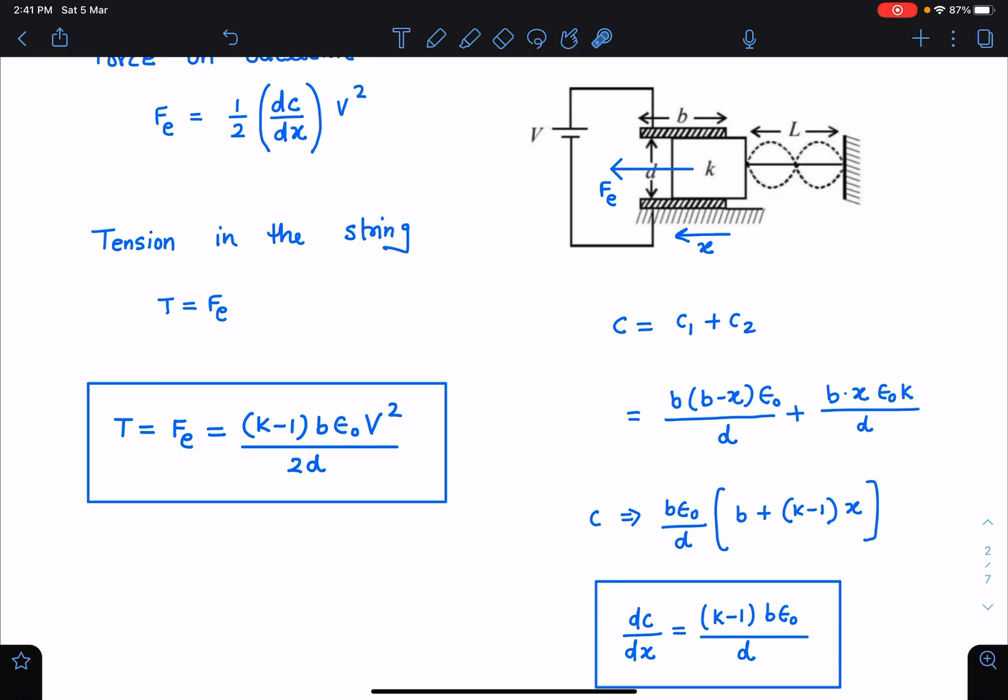When I simplify this I am getting C here and I can write dC by dx as (k minus 1) b epsilon naught by d. This is a constant so I'll recommend students to remember this force expression or at least this, so that quickly you can solve this problem. It will be for mains level, I feel this kind of problem will be a tough problem.